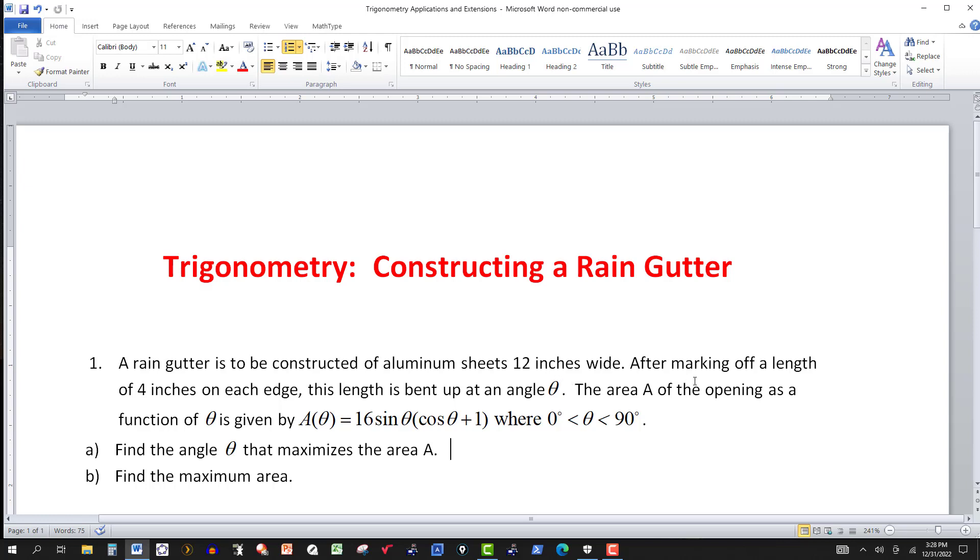After marking out a length of 4 inches on each side or edge, this length is bent up in an angle theta. The area A of the opening as a function of theta is given by A(θ) = 16sin(θ)(cos(θ) + 1), where the angle theta is larger than 0 degrees and less than 90 degrees.